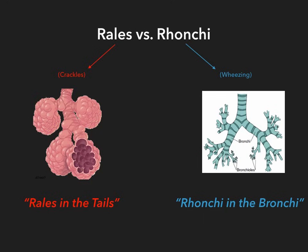If you can just remember Rails in the tails, it'll make sense, because in this image, if fluid accumulates in the bronchi, it'll probably flow downstream into the alveoli. So when you think of fluid problems, we really think of the alveoli as dealing with the brunt of that damage. Once again: Rails in the tails, Ronchi in the bronchi.